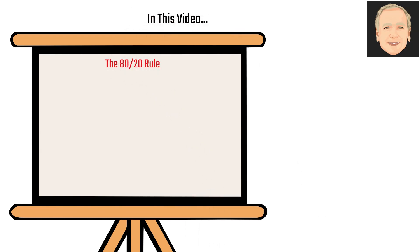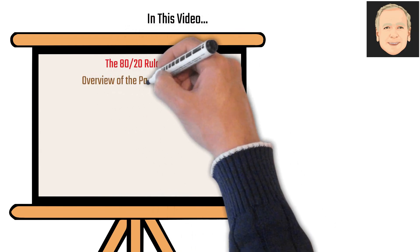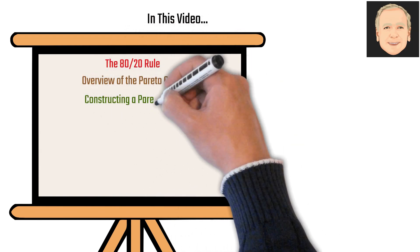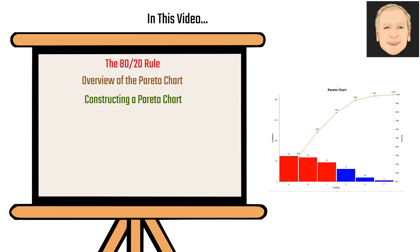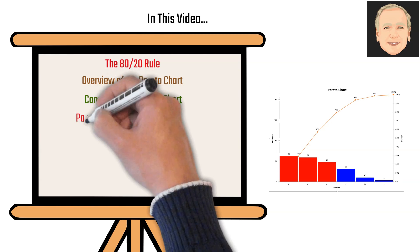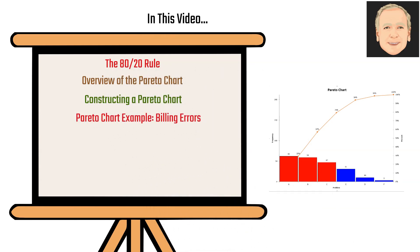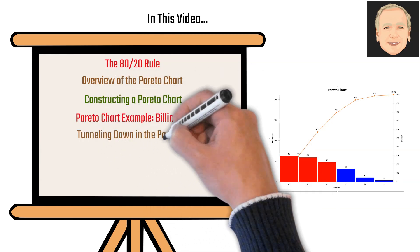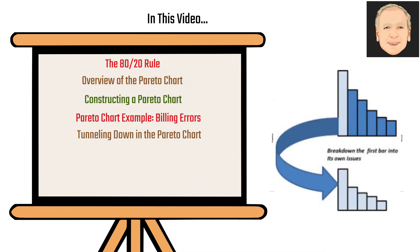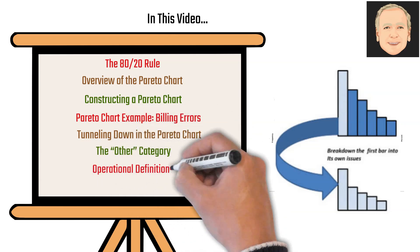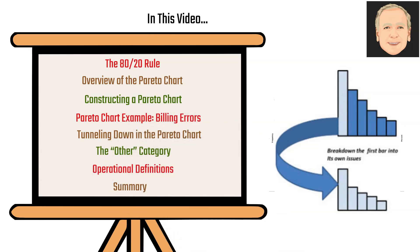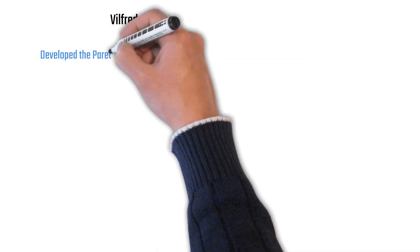In this video we're going to take a look at the 80-20 rule, an overview of the Pareto chart, how you construct a Pareto chart, Pareto chart examples such as billing errors, how you tunnel down, the other category, operational definitions, and then a summary. Vilfredo Pareto was an Italian economist.